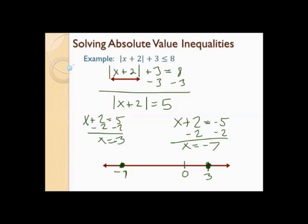Absolute value of 0 plus 2 is 2. Absolute value of 2 is 2. Two plus 3 is 5. And 5 is less than or equal to 8 — plugging into the original inequality, this works. So that means this is an 'and.'